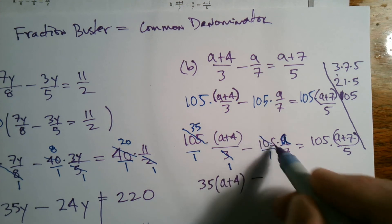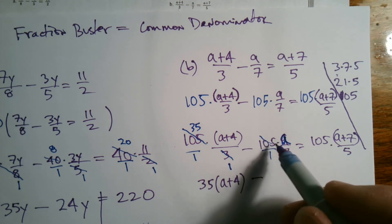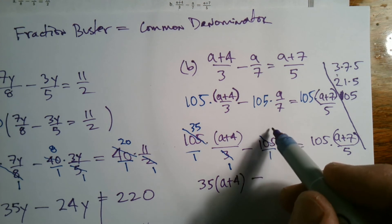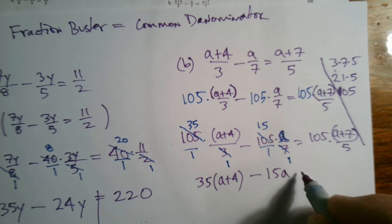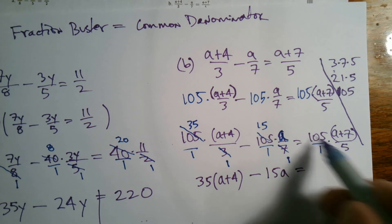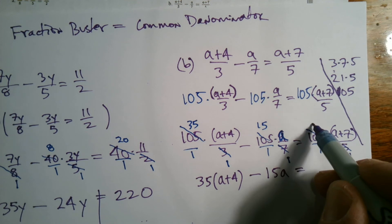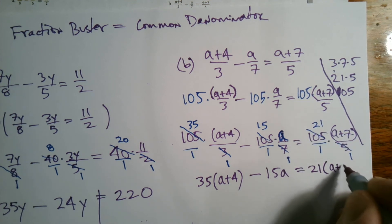So the 105 and the 7 cross simplify. 7 divided by 7 is 1, 105 divided by 7 is 15, so I end up with 15 times a. 15a equals - again put the 105 over 1 - 5 into 5 is once, 105 divided by 5 is 21. So I'm going to rewrite this becomes 21 times a plus 7.